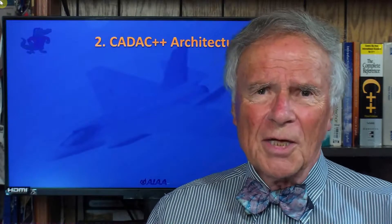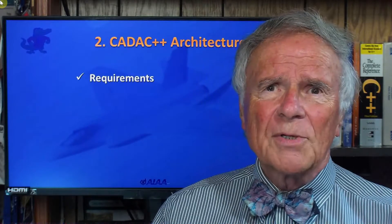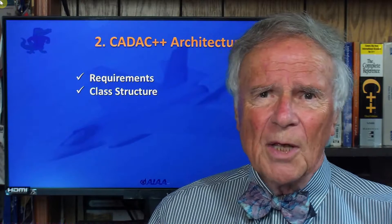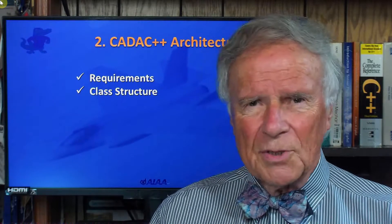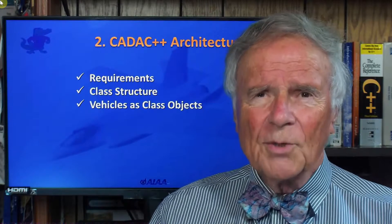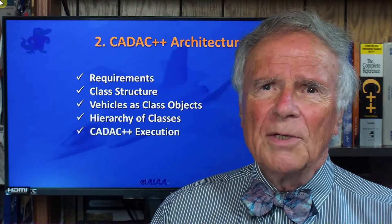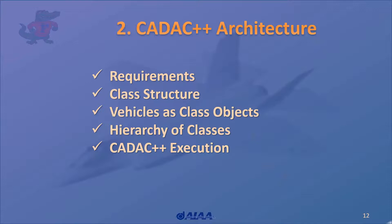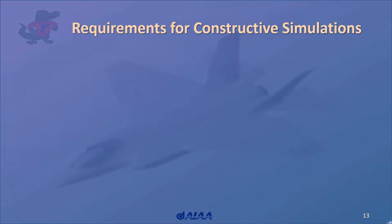Building a computer architecture is like building a house — one first starts with requirements. In our case, these requirements translate into a class structure of our CADEC++ simulation, the blueprint of any C++ simulation. Our vehicles are the main objects derived from a class hierarchy, and with all this in place we can run our CADEC simulation. Like any architect, requirements must be specified before construction begins, and there's no difference with building a new simulation architecture.